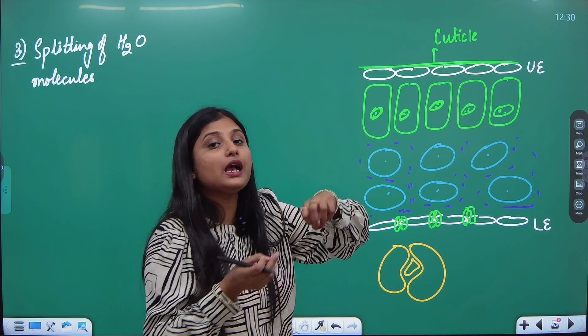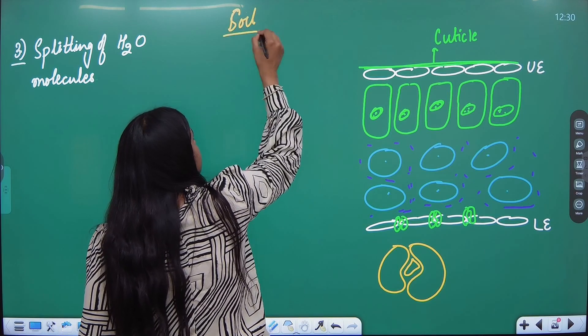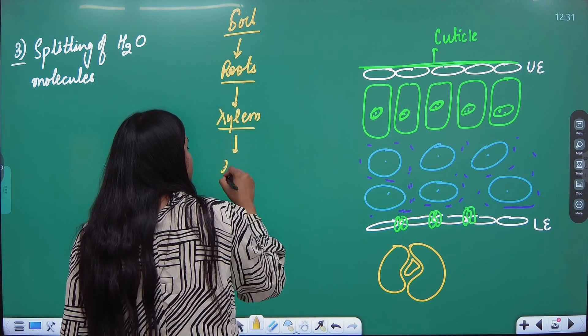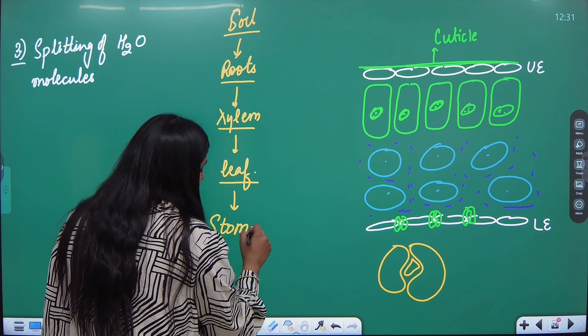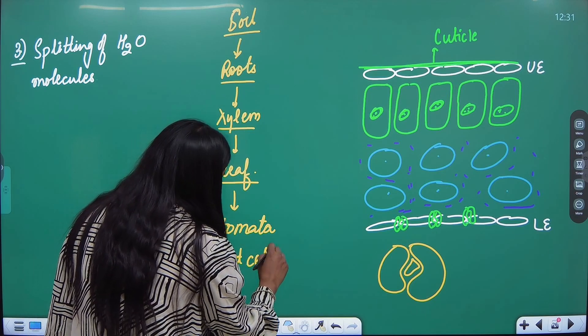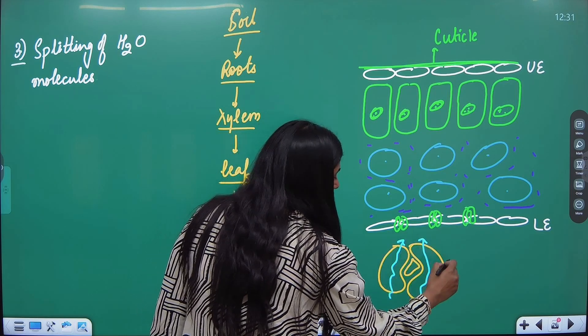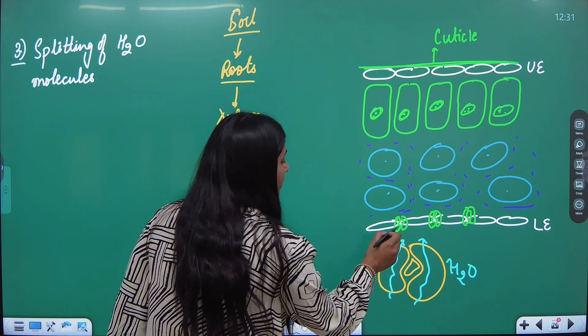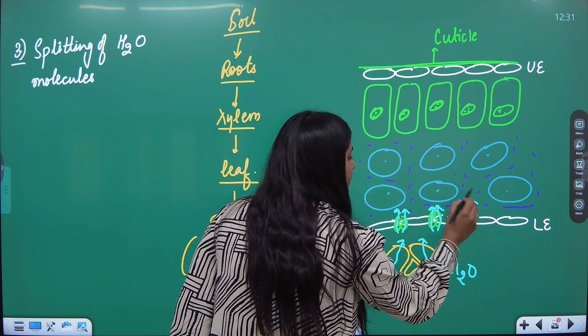Now I'll tell you how things enter inside. Here is our stomata. Water which came from the root with the help of xylem - flashback: water is present in soil, roots pull it, roots give it to xylem, xylem brings it to the leaf. After coming to the leaf, this water enters the stomata through guard cells. So the guard cells I have drawn will fill themselves with water and push it upward like this. Water will be entering inside via this flowchart.